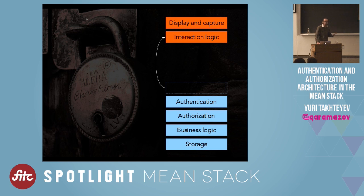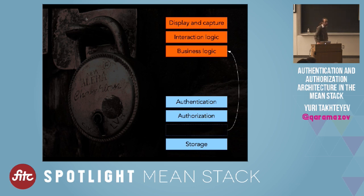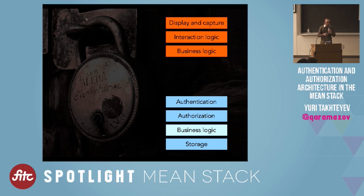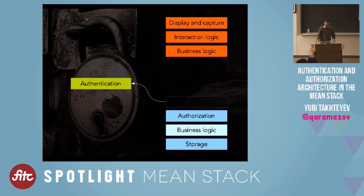The first thing that had to go was interaction logic — we realized user experience could be a lot better if we moved interaction logic to the client, because we get snappier performance. Today there's very little reason to put interaction logic on the server. The next thing is we start thinking about putting business logic on the client. This turns out to be a little trickier — we can't really move all business logic to the client. What we often do today is split it: some business logic on the server, some on the client.